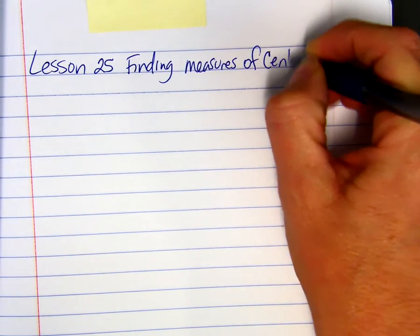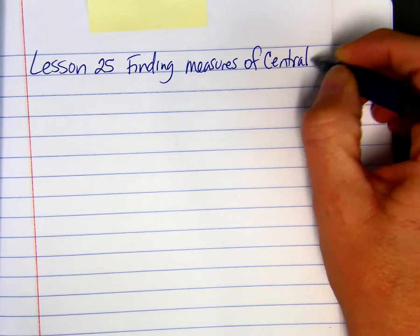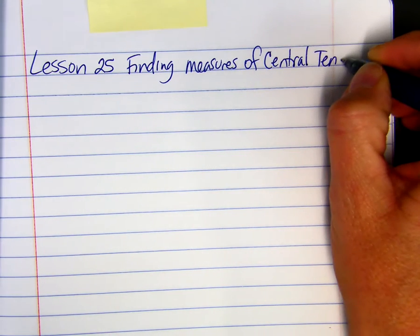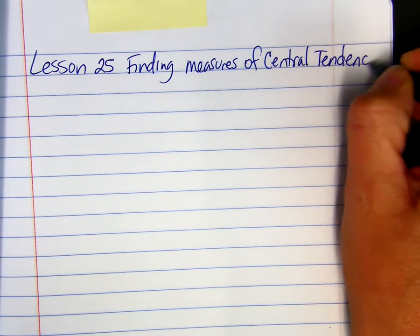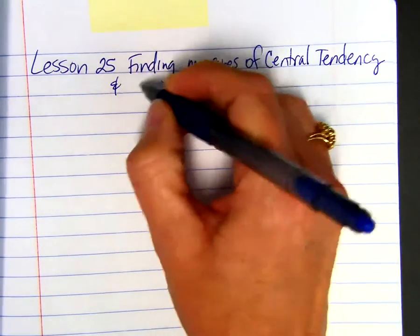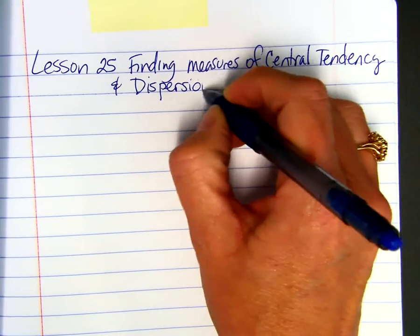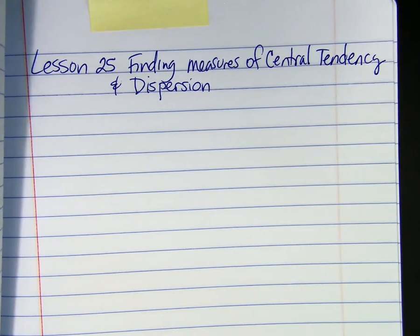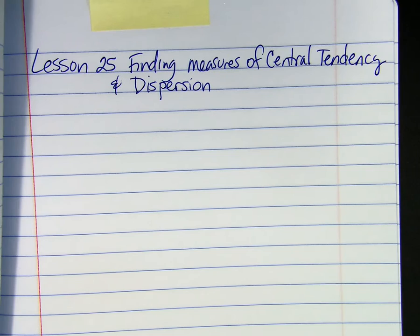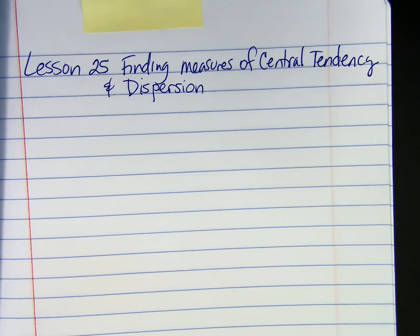Now, measures of central tendency does not include range. So whenever you're asked questions about measures of central tendency, they're only talking about the three M's: mean, median, and mode.